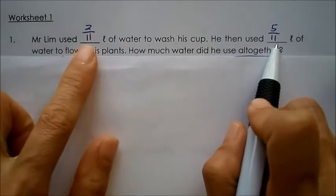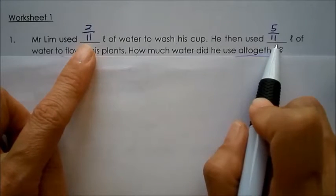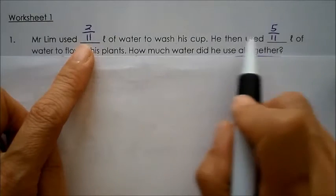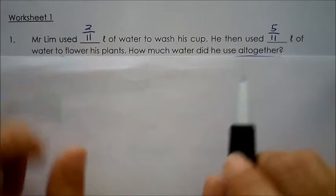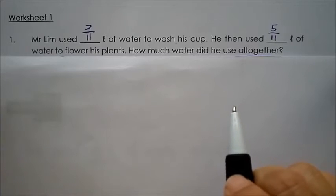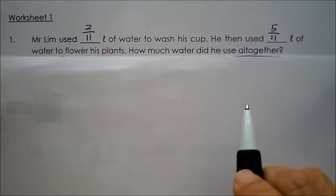Looking at the two fractions, both fractions have the denominator 11. So therefore this is actually addition of like fractions. This is a very straightforward question because it just involves fractions with the same denominator. So you don't actually need to draw a model. However, for pupils who need to see it visually, I shall draw a model to show you.